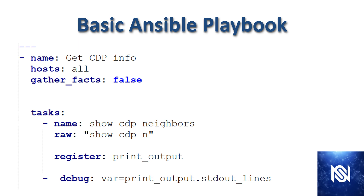Underneath the name of the play, we have hosts and gather facts — those are both parameters. Then we have tasks. Each play can have more tasks, and much in the same way we could add a second task. To do so, we would just add another dash space name, just like we do right here. Underneath the task section, we also named the task itself. You can have multiple tasks in this section. If we wanted to add a second one, we would use the same dash space name line underneath the debug here and give it another name.